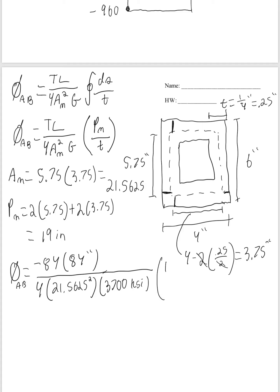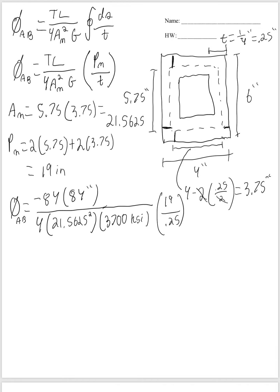Times the mean perimeter, 19. Over the thickness, we said the thickness of the cross-section is 0.25. So we get the angle twist AB is a negative 0.07793 radians.